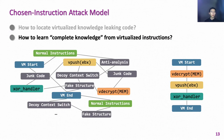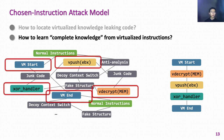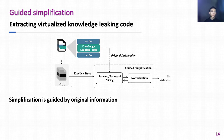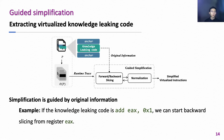Moving to the second problem: how to learn complete knowledge from virtualized instructions. After locating virtualized knowledge-leaking code, we still have to split the important virtualized instructions from junk instructions. To solve this problem, we propose the guided simplification method. Since the original knowledge-leaking code is known, we can use forward and backward slicing to extract related virtualized instructions. For example, if the knowledge-leaking code is ADD EX, 0x1, we can start backward slicing from register EX. After normalization, we can get simplified virtualized instructions.